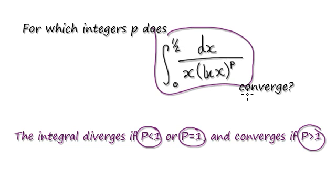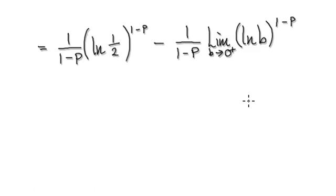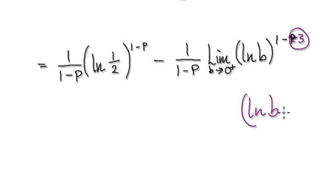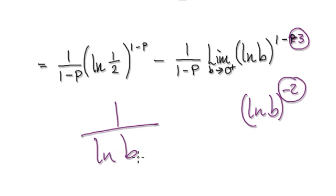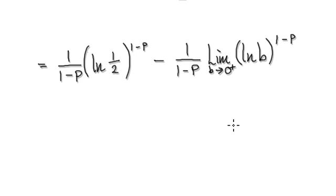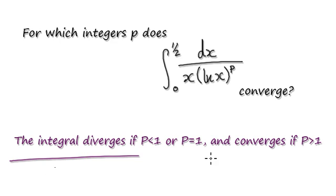So to summarize: the integral will diverge if P is less than or equal to 1, and it will converge if P is greater than 1. If you put 3 into P, you get the natural log of b to the power of negative 2, which is 1 over the natural log of b squared — and that heads towards 0. So this is your final answer.